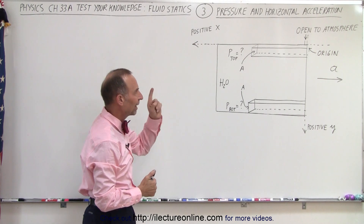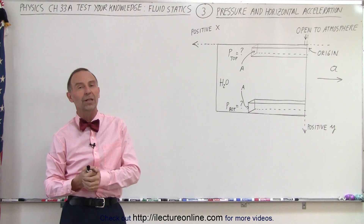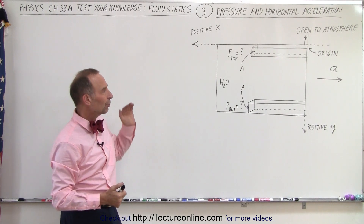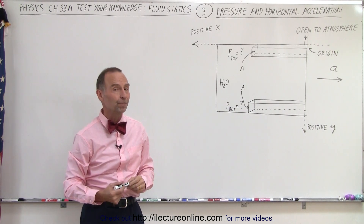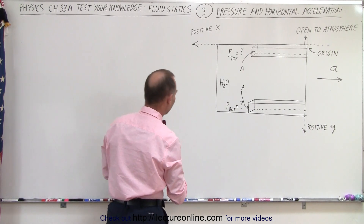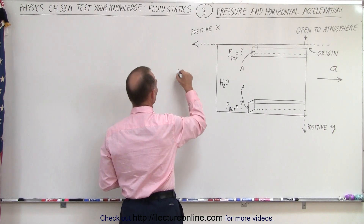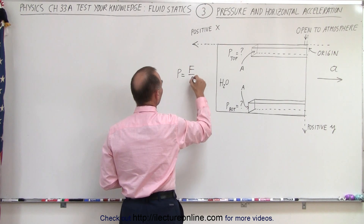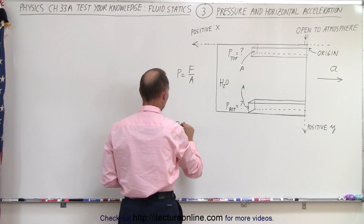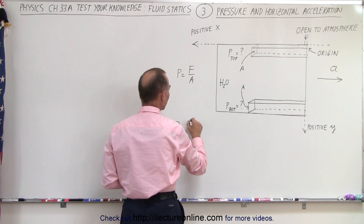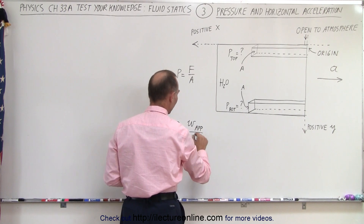What is the pressure at the top of the tank? Normally, we'd say the pressure is zero because you're not down into the liquid. But that's not going to be the case because you're accelerating — so there is pressure caused by the acceleration. The way we're going to do that is: pressure, by definition, is equal to the force divided by the area. So in this case, the pressure is equal to the force, which is going to be the apparent weight of the liquid, divided by the area.